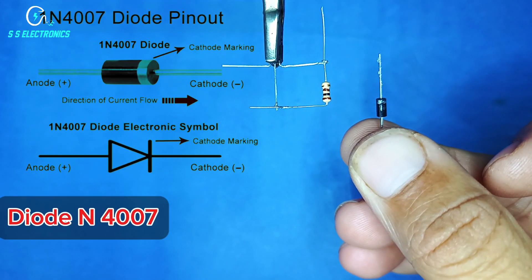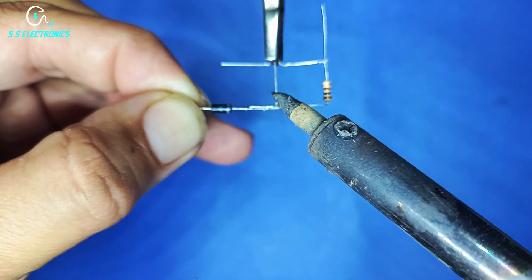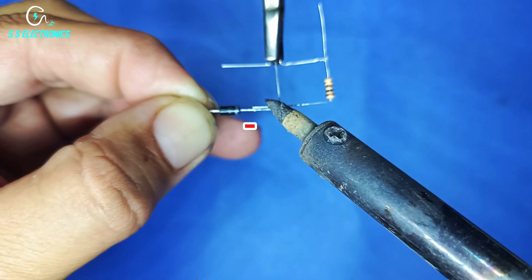Diode N4007. Connecting diode cathode side with transistor base pin.